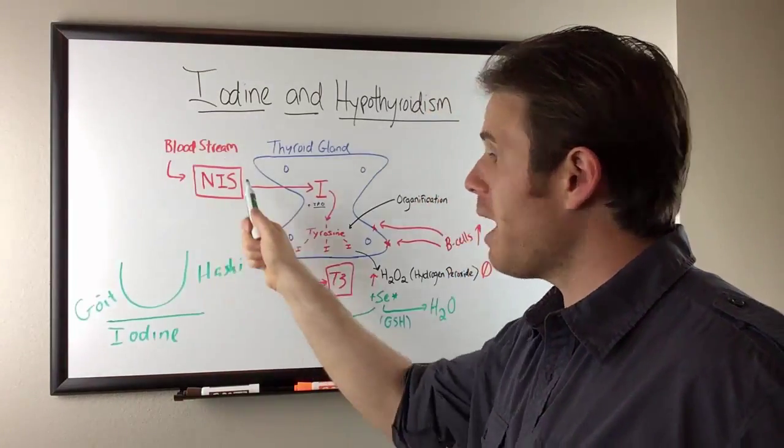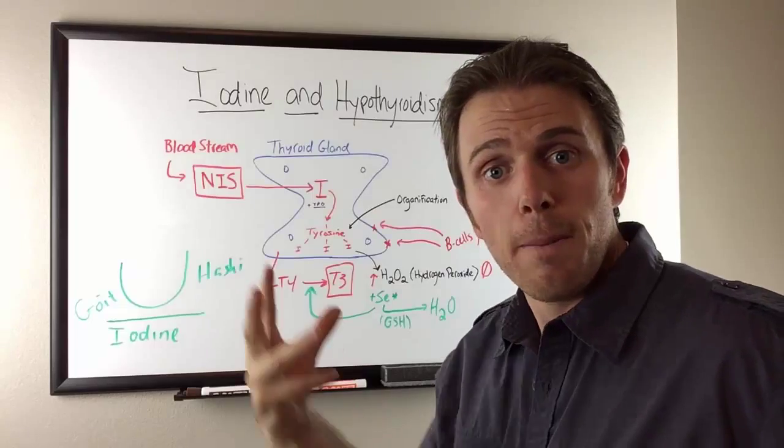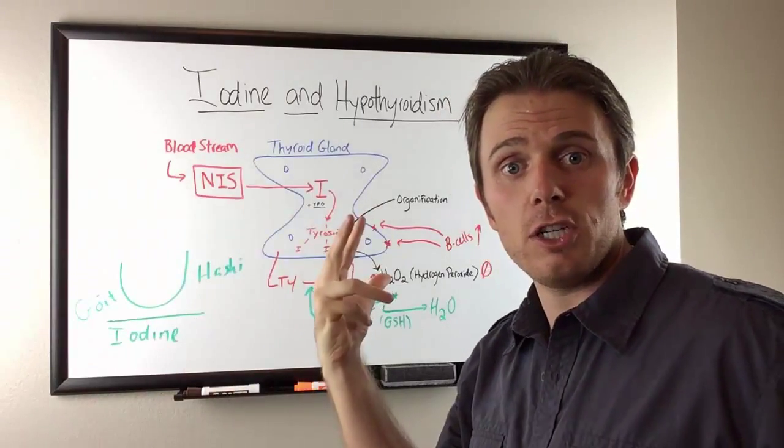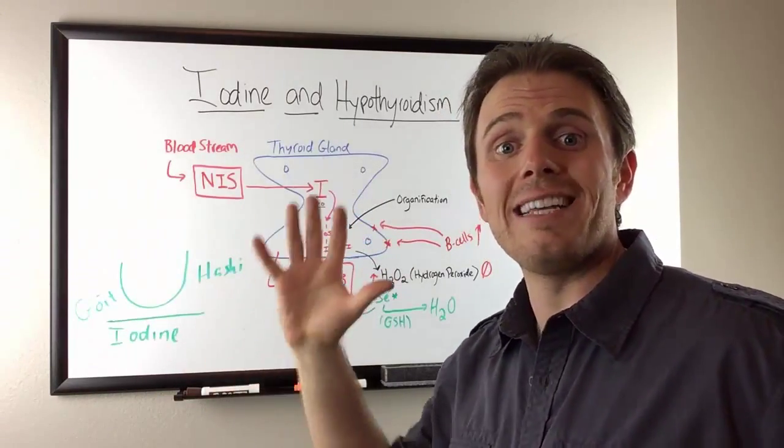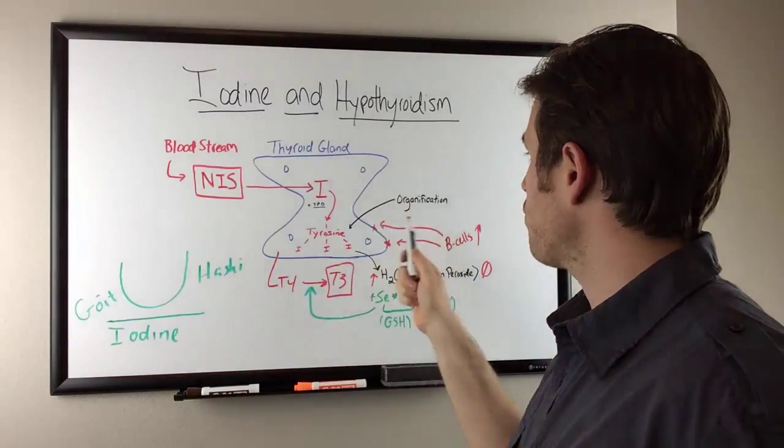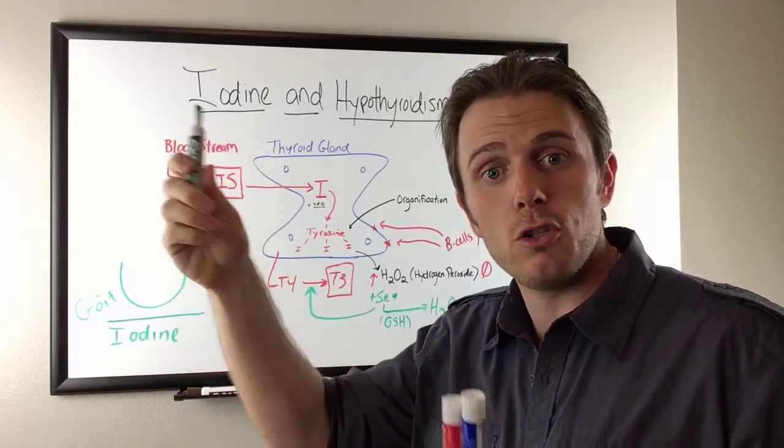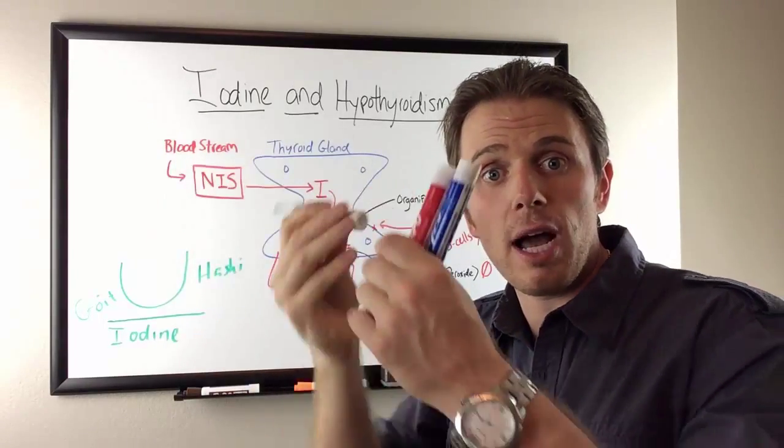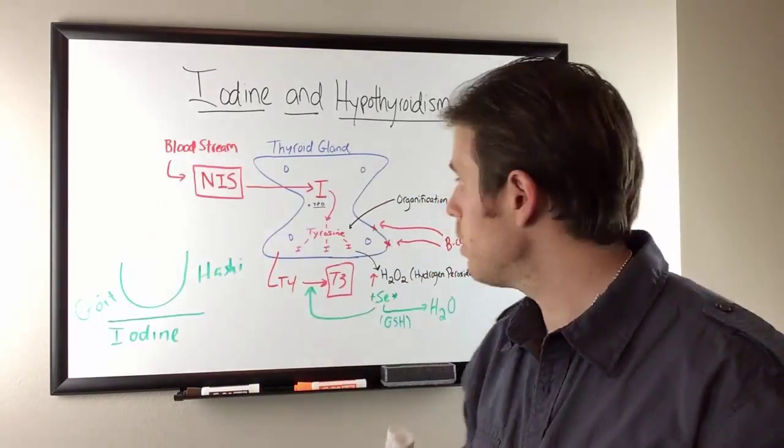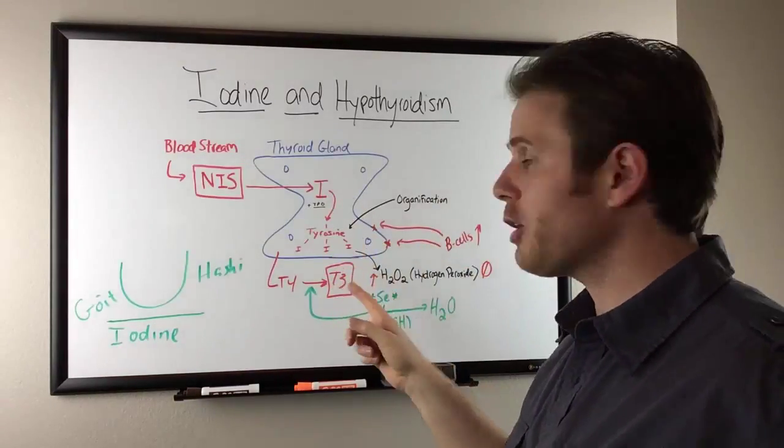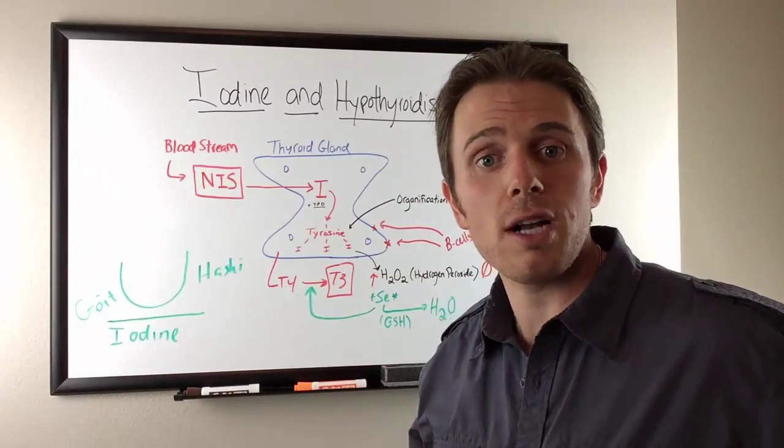Recap: sodium iodine symporter brings iodine into the thyroid tissue. Iodine gets converted to iodide. That iodide goes through a process called organification where the iodide is then bounded to a tyrosine molecule. So we have four iodines, one, two, three, four. From that reaction, H2O2, hydrogen peroxide spits out.